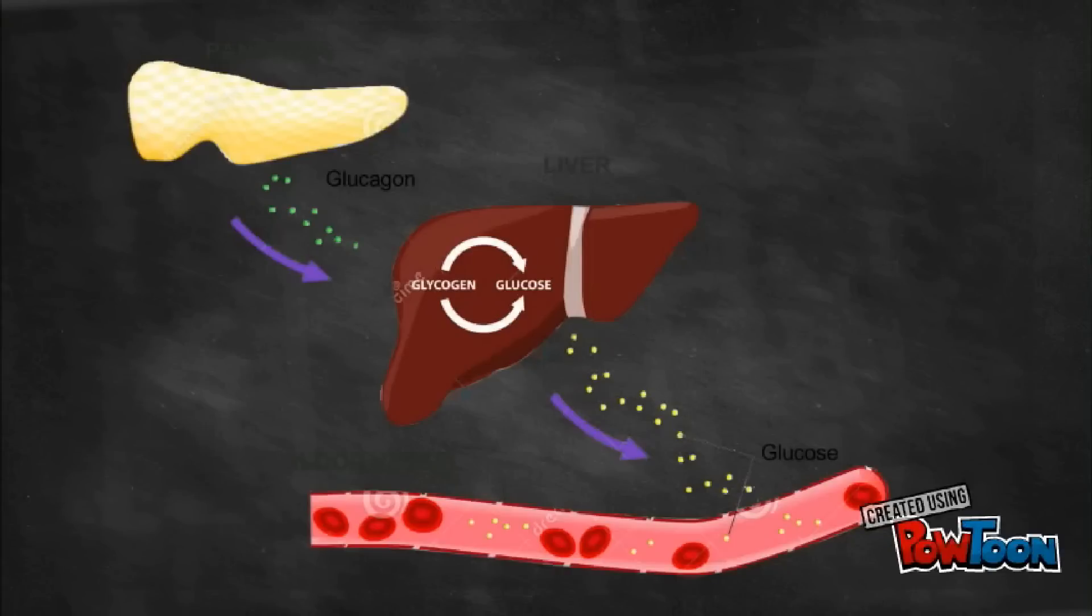A constant source of blood glucose is an absolute requirement for human life. That is why the body developed mechanisms for storing a supply of glucose in a rapidly mobilizable form, namely glycogen.